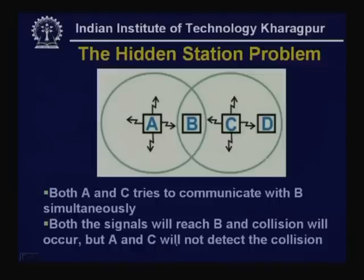In such a case, both signals reach B and collision occurs, but A and C will not be able to detect the collision. A and C will not know about it. This is the hidden station problem.